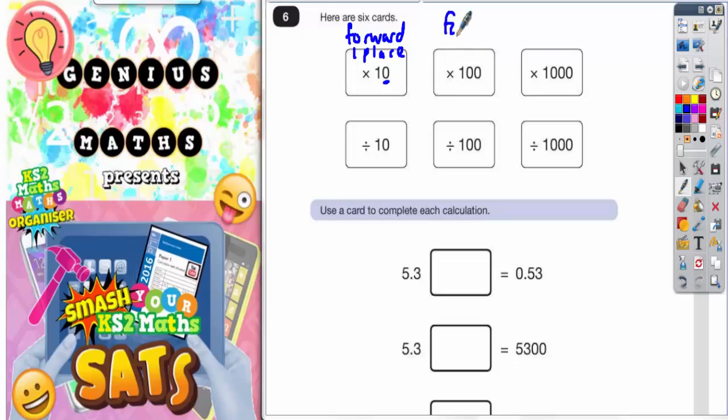If you multiply by 100, the digits have moved forwards two places because there are two zeros. 1000 moves all the digits forwards three places because there are three zeros.